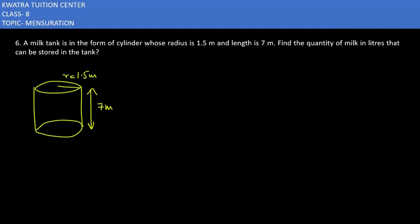Now they are saying find the quantity of milk in liters that can be stored in the tank. So how do you get it? It is basically equal to the volume of the cylindrical tank, because quantity of milk means how much milk can be used in this tank. So yes, it would be volume of the cylindrical tank, which is equal to πr²h.